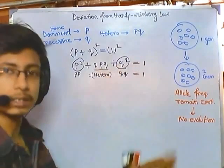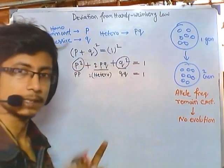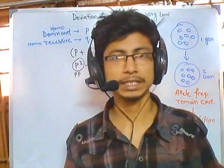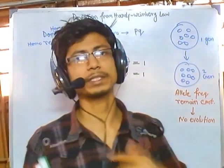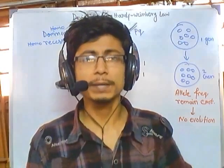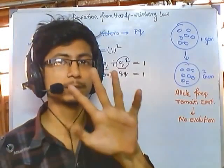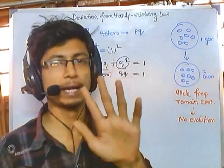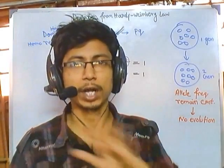But this never happens in the actual world because this is just a theory. In a population, the genetic frequency and allelic frequency always change. For Hardy-Weinberg Law to be fulfilled, there are 5 important parameters to be maintained. If we don't maintain those 5 parameters, then the Hardy-Weinberg Law will fail. And in nature, those 5 conditions are never fully maintained.